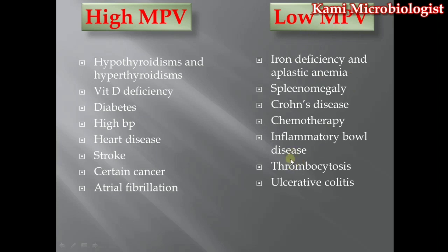High production of thrombocytes means the platelets are being split further, leading to a low mean platelet volume. Ulcerative colitis causes low mean platelet volume because in this condition the intestines become inflamed, increasing the chances of bleeding; due to this bleeding, the mean platelet volume gets low. These are the main causes, conditions, and diseases in which the mean platelet volume gets high or low.